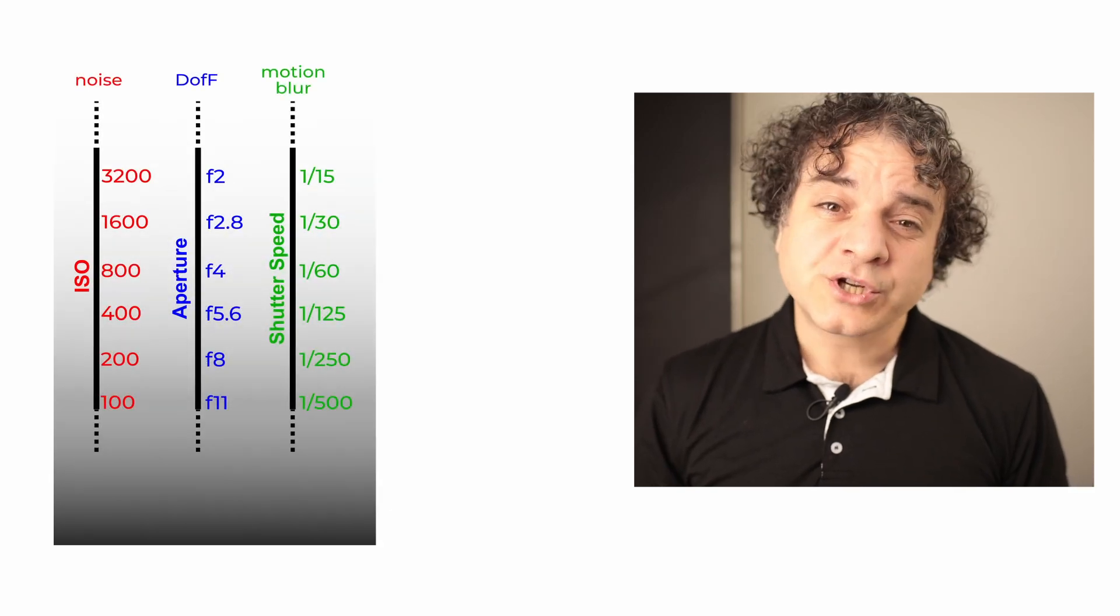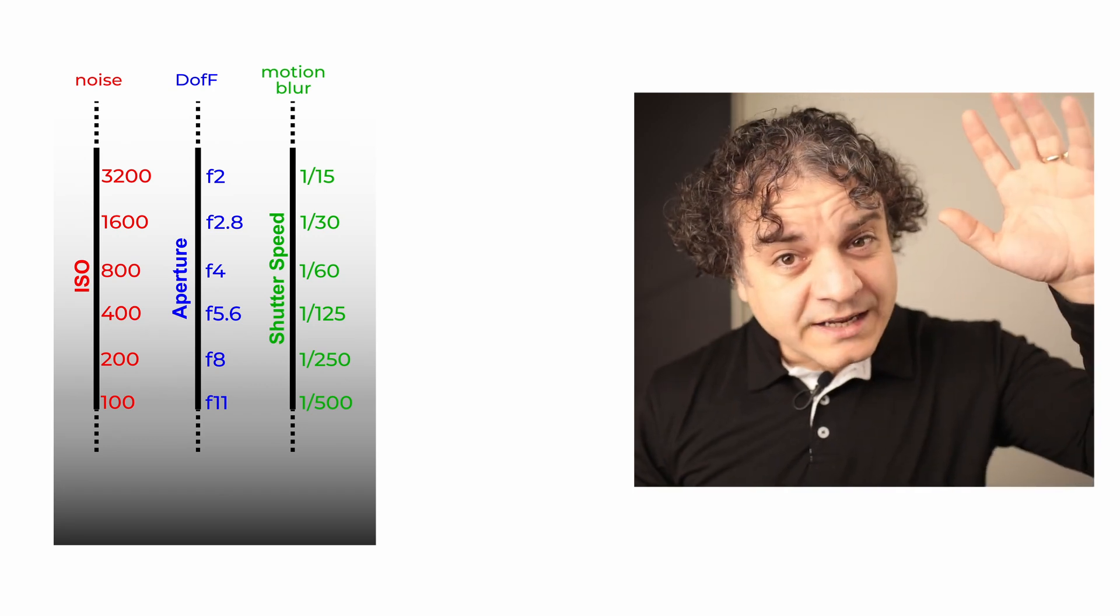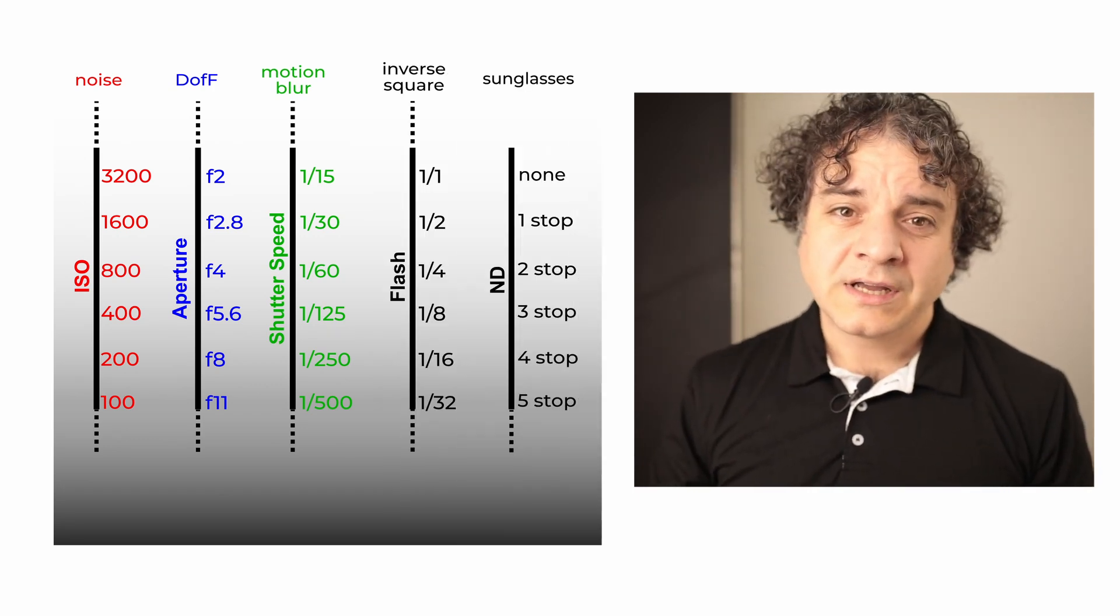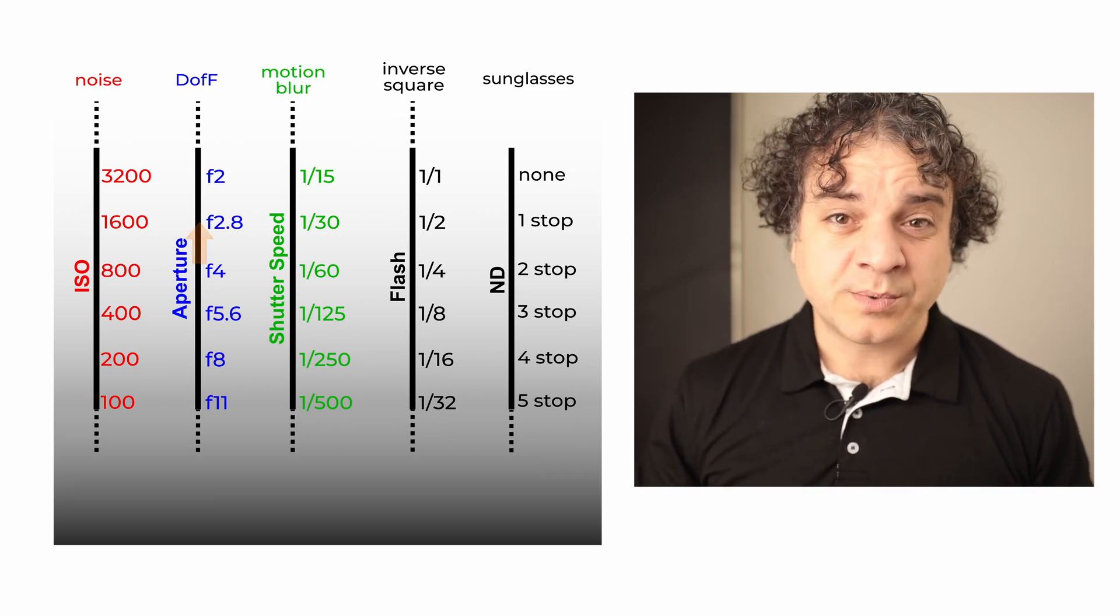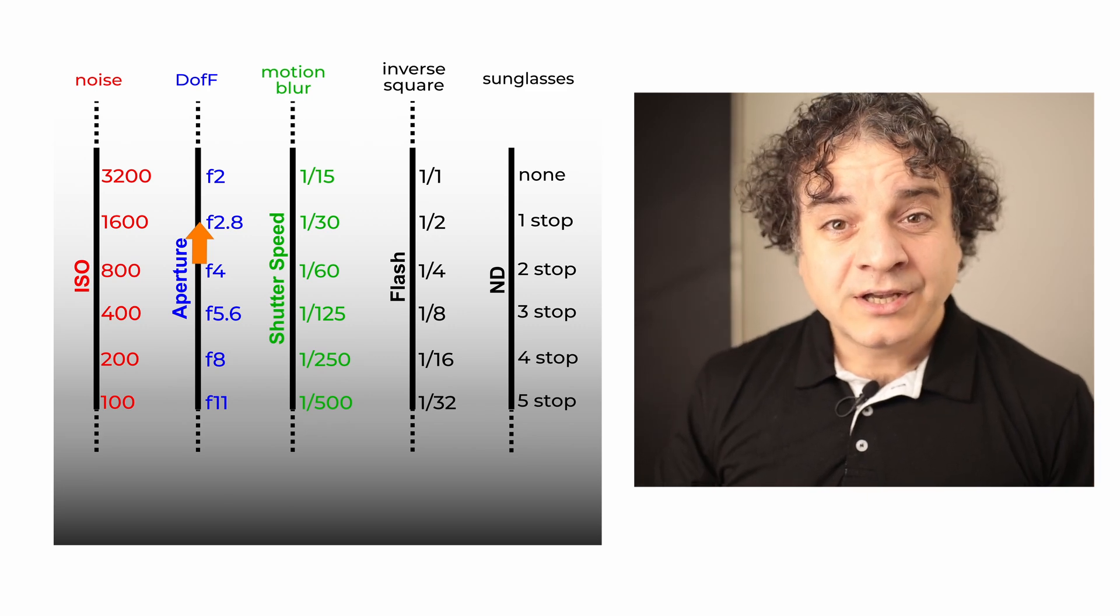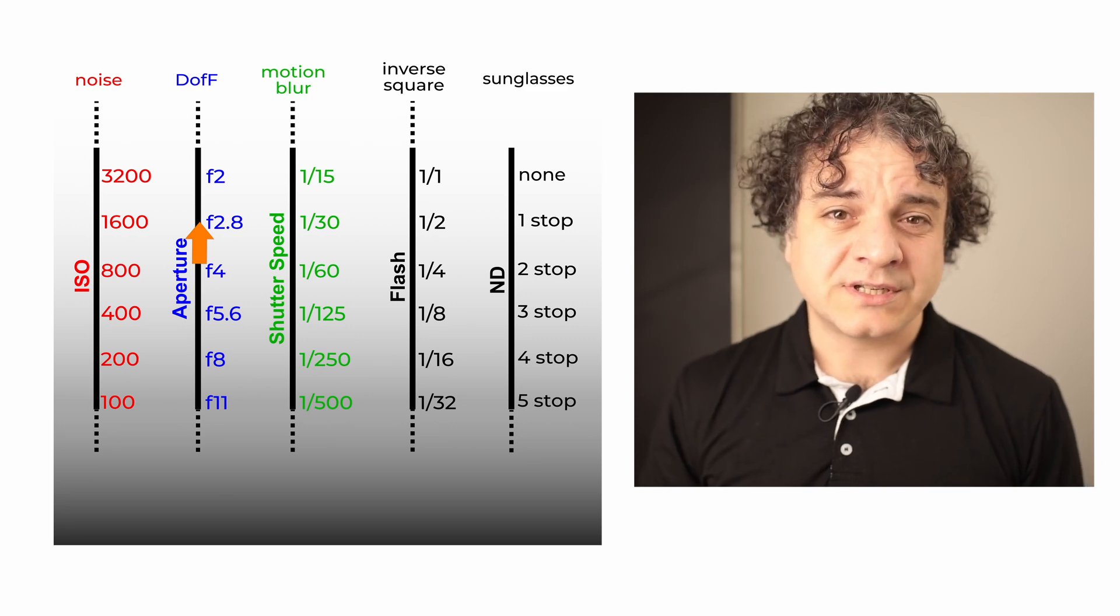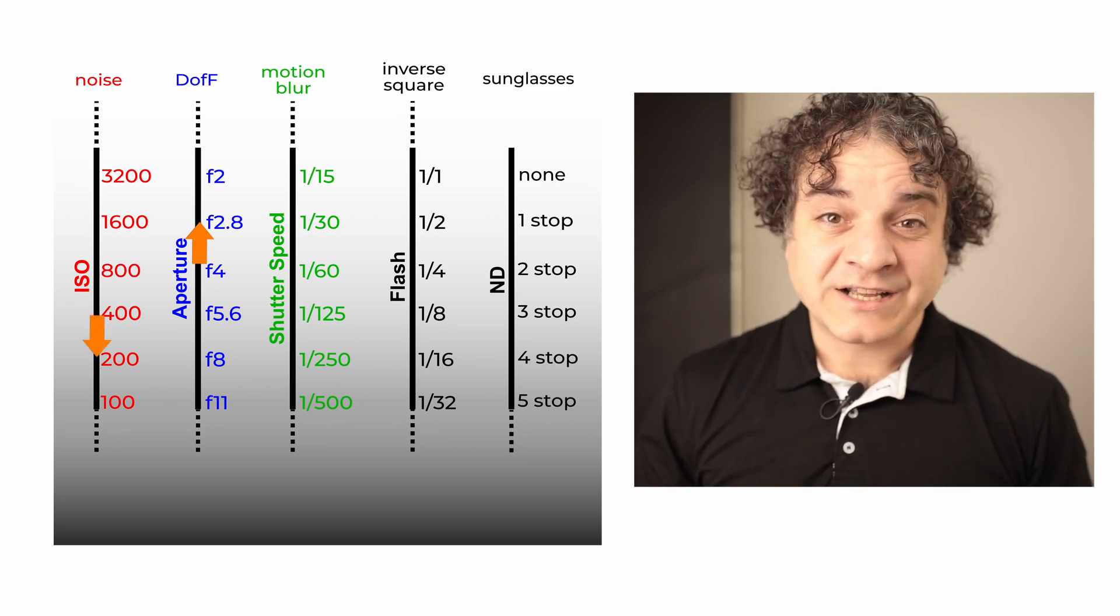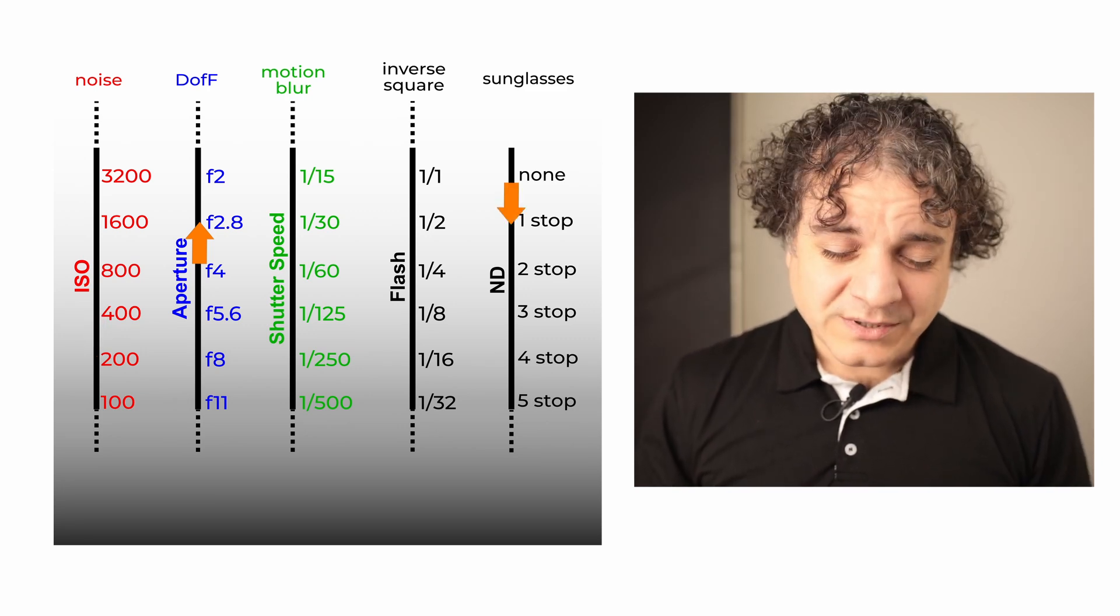I realize the concept of the triangle is aimed at beginners, showing the three different sets of settings all at the same time. But so do three separate lines, which can show the concepts far simpler because we can put the darkest settings at the bottom and the brightest settings on the top. And look, I can add flash and ND filters to this. So if you add a stop of light by opening your aperture, you can compensate by reducing the light by a stop from any of these other sources, perhaps the ISO, perhaps by adding a stop of ND. Lines are better than triangles, but don't tell Pythagoras.